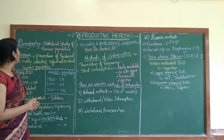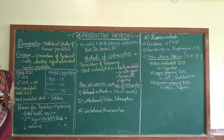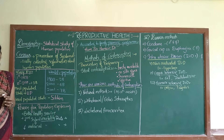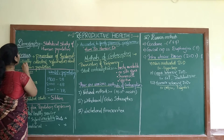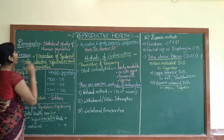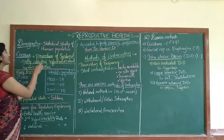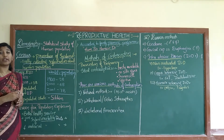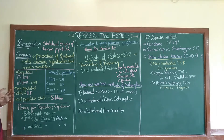Firstly, what is demography? It is a statistical study of human population. Census, called 'janaganati' in Kannada, is the procedure of systematically collecting information about the human population. This statistical data is collected systematically, and this procedure is called a census. The Indian government is putting a lot of effort to control and maintain the population.